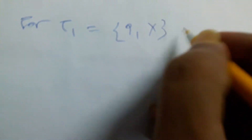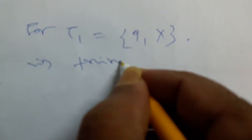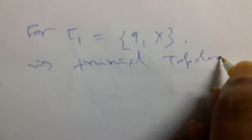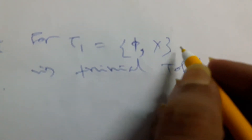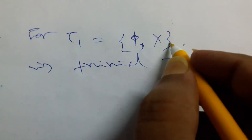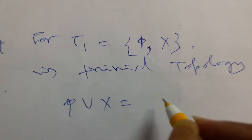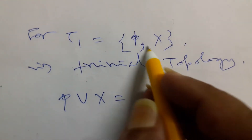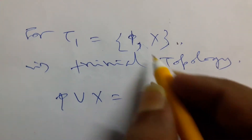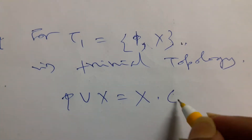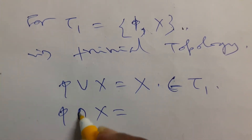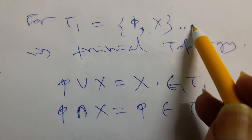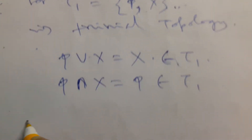For tau one, which is {phi, X} — the trivial topology — the first criterion is satisfied since phi and X are present. The union of any elements in tau one is also in tau one, since union of phi and X gives X, which belongs to tau one. The intersection also gives phi, which is also in tau one. So criteria two and three are satisfied, and tau one is a topology.